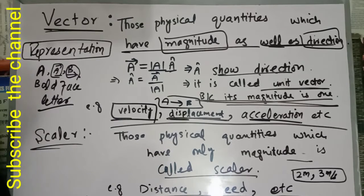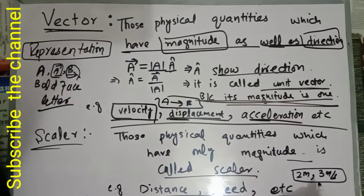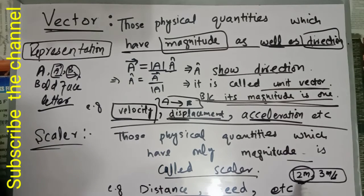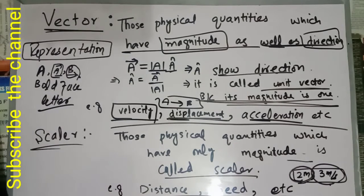Scalar quantities have only magnitude. Examples include distance and speed. Two meters is our distance, but we don't know which direction - north, east, west, or south. Speed is basically the magnitude of velocity.